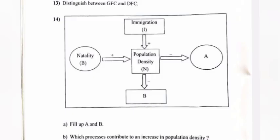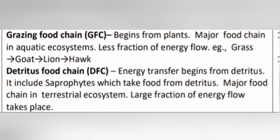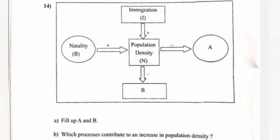Question 13: Distinguish between GFC and DFC. Answer: The Grazing Food Chain (GFC) begins from plants, is the major food chain in aquatic ecosystems, and involves less fraction of energy flow. Example: grass → goat → lion. The Detritus Food Chain (DFC) begins from detritus, includes saprotrophs which take food from detritus, is the major food chain in terrestrial ecosystems, and involves a large fraction of energy flow.